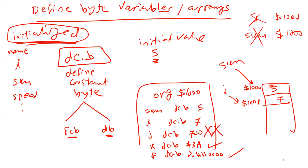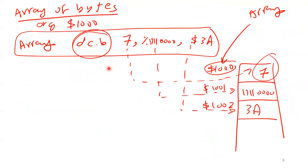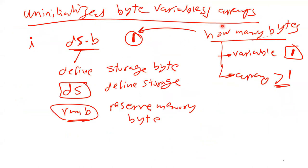You could just use the number 1000 directly, but in a big program you'd have to remember all the numbers. When you use English names like 'speed' it's much easier. Every time you write a variable name and the program is converted to machine code, it gets replaced by its address. DS.B defines an uninitialized byte array — the only difference from DC.B is 'DS' instead of 'DC', and there is no initial value.